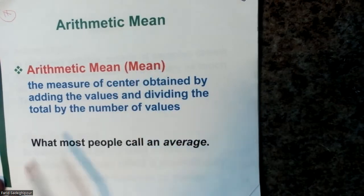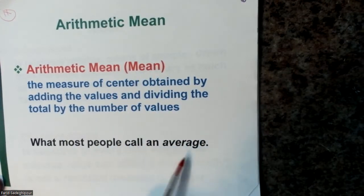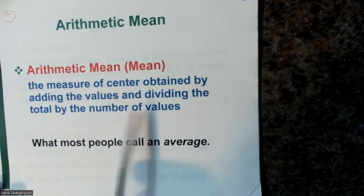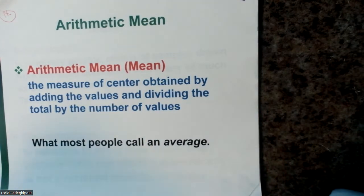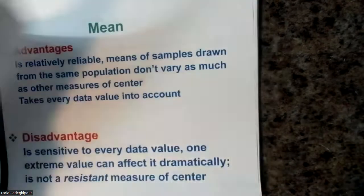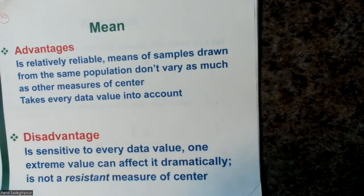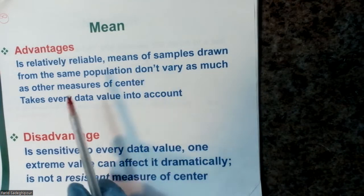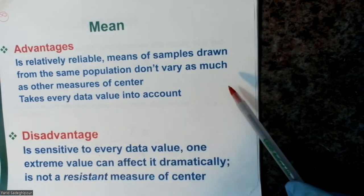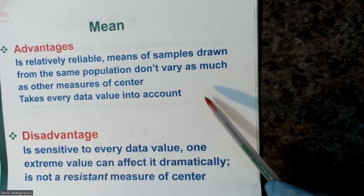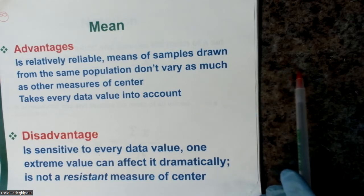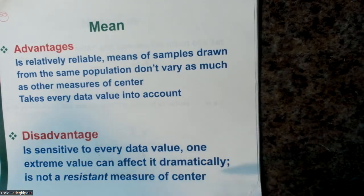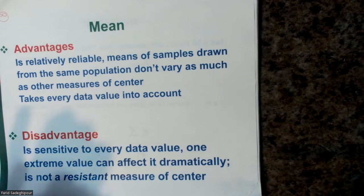One of the definitions is the mean — sometimes called the average. It is the measure of center obtained by adding the values and dividing the total by the number of values. The advantage of the mean is that it is relatively reliable; means of samples drawn from the same population do not vary as much as other measures. It also takes every data value into account.